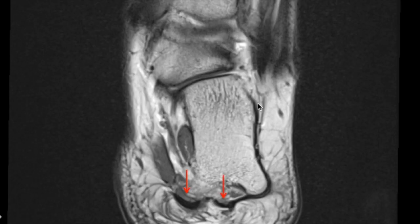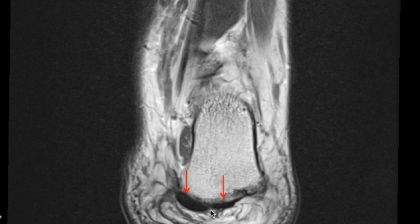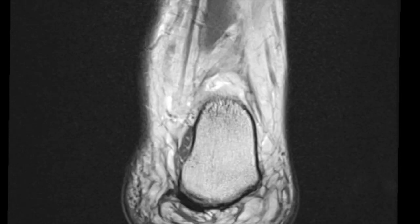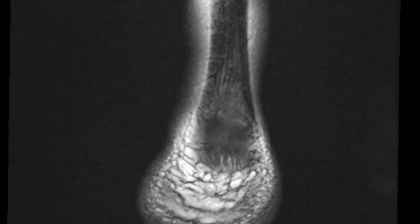The next is the plantar fascia — this is the central band and this is the lateral band of the plantar fascia, which attaches to the calcaneum. The posterior most structure is the Achilles tendon.